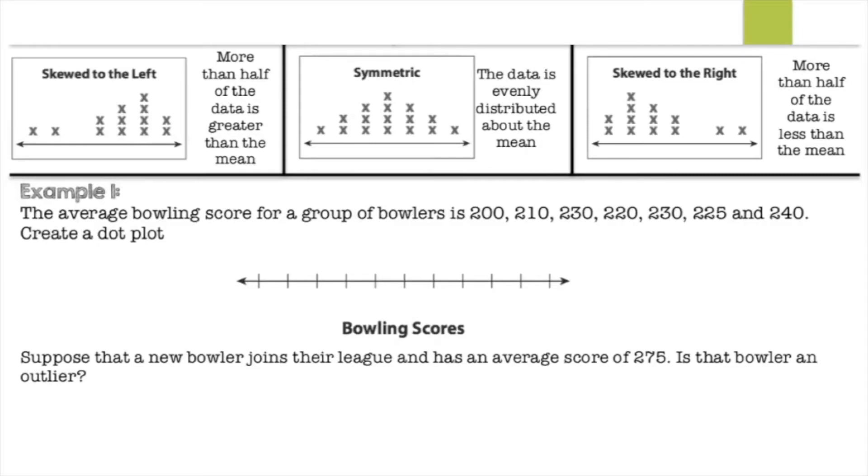So let's take a look at an example. So we have the average bowling score for a group of bowlers is 200, 210, 230, 220, 230, 225, and 240. Create a dot plot. So first thing we have to do is put it in order from least to greatest. Alright, so now that we have them in order from least to greatest, we can set up our number line. So our number line has to be between 200 and 240.